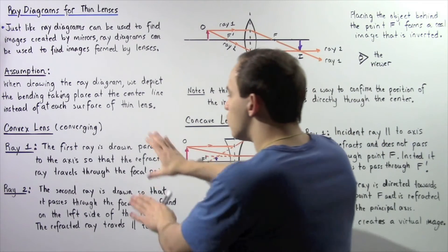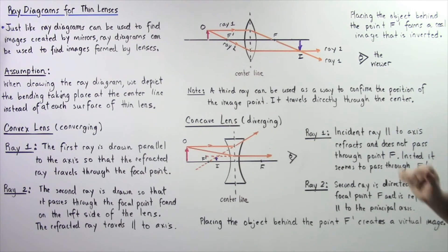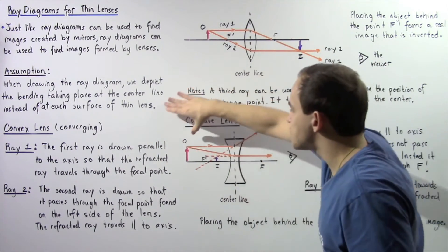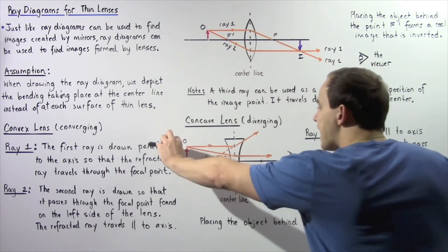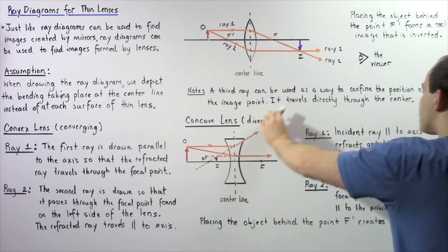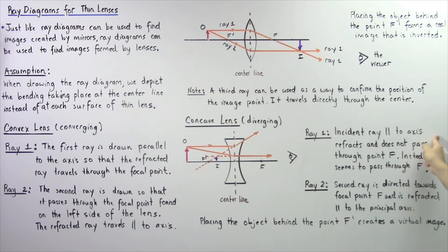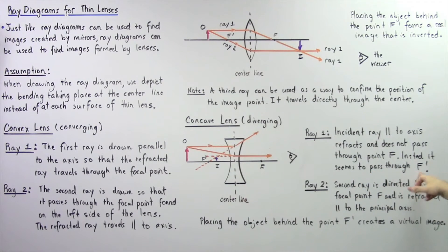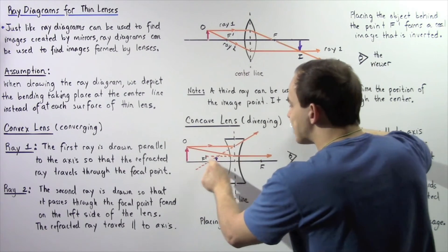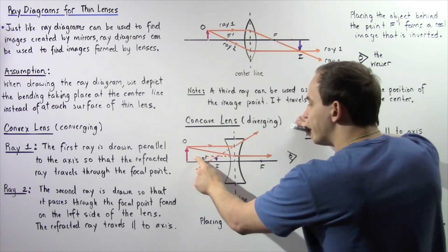We follow the same procedure. Incident ray number one is parallel with respect to our axis, beginning at the tip of our object — the object point. Eventually when it hits the center line, it refracts and travels in a diverging direction. The incident ray parallel to the axis refracts and does not actually pass through focal point F. Instead, if we extend the refracted ray backward using a dashed line, it appears to pass through focal point F1.